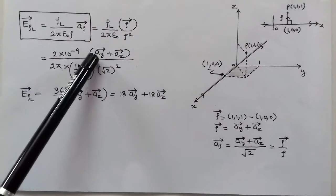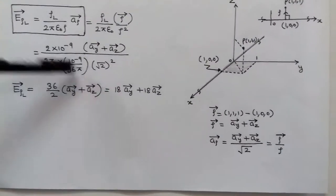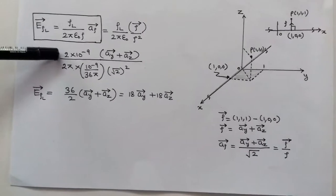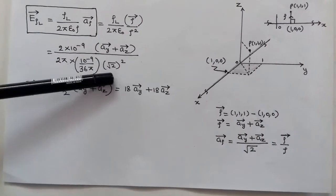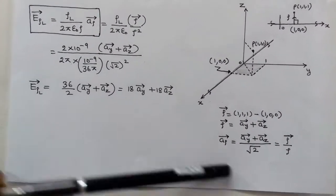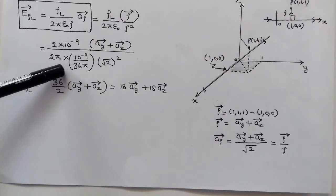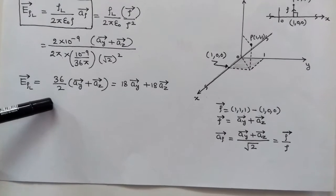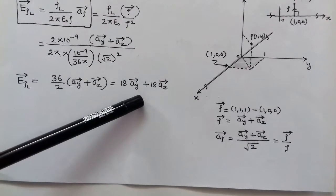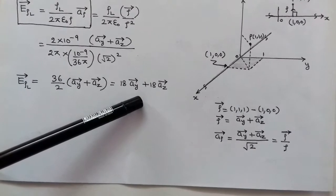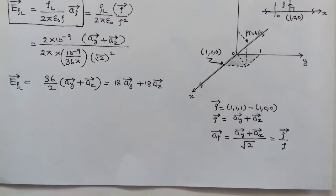Substituting the values — ρL = 2 nanocoulombs, vector ρ = ŷ + ẑ, magnitude ρ = √2, and ε₀ = 10⁻⁹/36π — we get the electric field due to the line charge as 18 ŷ + 18 ẑ V/m.